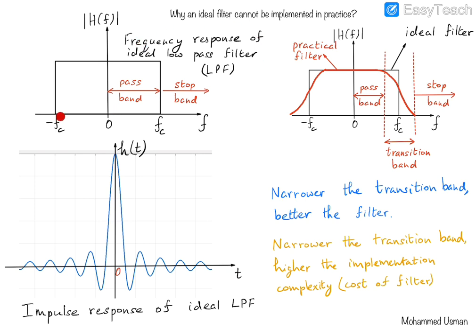We see that the frequency response has a rectangular shape. We call this a box filter, which has a frequency response in the shape of a rectangular pulse. It has a certain cutoff frequency, which we denote as FC. The range of frequencies allowed to pass through this filter are from 0 up to FC — that range is called the pass band. The frequencies above FC, which are blocked by the filter, that frequency band is called the stop band.